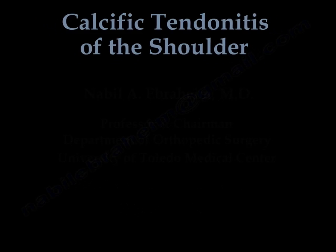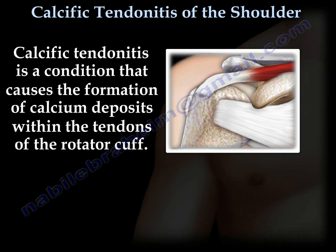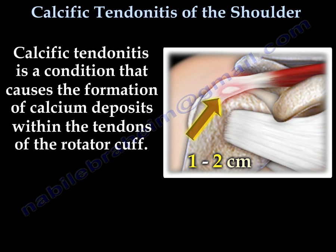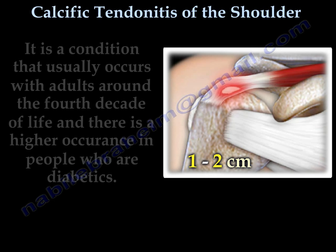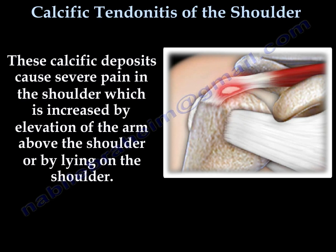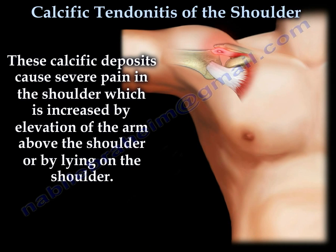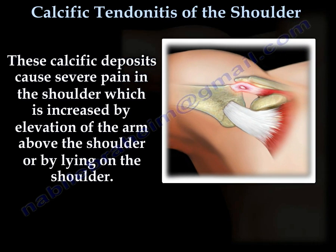Calcific tendinitis is a condition that causes the formation of calcium deposits within the tendons of the rotator cuff. These deposits are usually about 1-2 cm in length. The condition usually occurs in adults around the 4th decade of life, and there is a higher occurrence in people who are diabetics. These calcific deposits cause severe pain in the shoulder, which is increased by elevation of the arm above the shoulder or by lying on the shoulder.